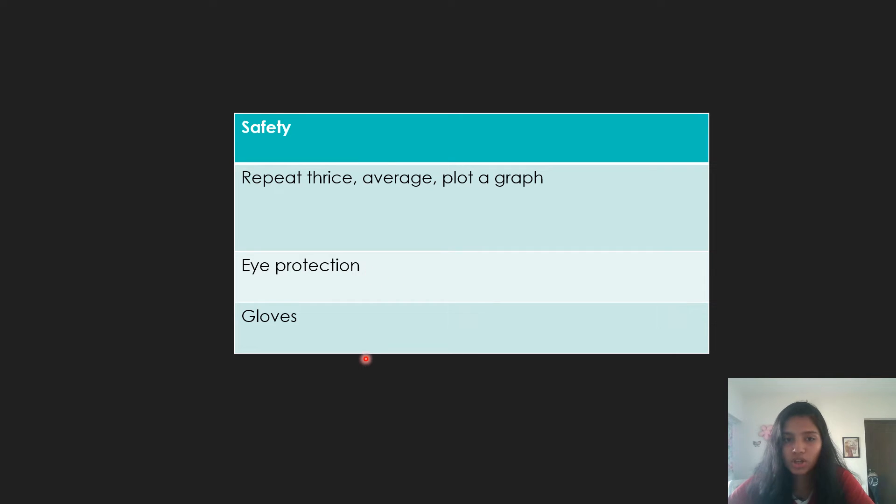Then eye protection and gloves are basically interchangeable. You get one mark. So usually in experiments where you have like fire or like a corrosive liquid or something, you can use eye protection.